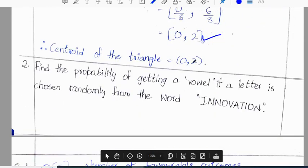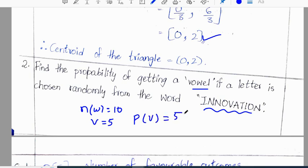Find the probability of getting a vowel if a letter is chosen randomly from the word innovation. In innovation, number of letters is 10 and vowels are 5. The probability of getting a vowel is 5/10 which is 1/2.